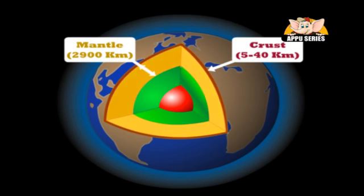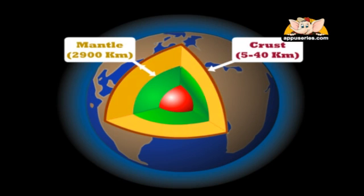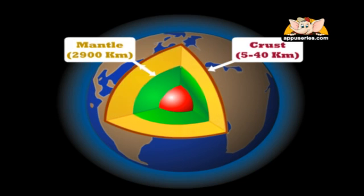The next layer is the mantle, which is composed mainly of iron, magnesium and silicon. It is about 2900 kilometers thick and is separated into the upper and lower mantle. This is where most of the internal heat of the Earth is located.